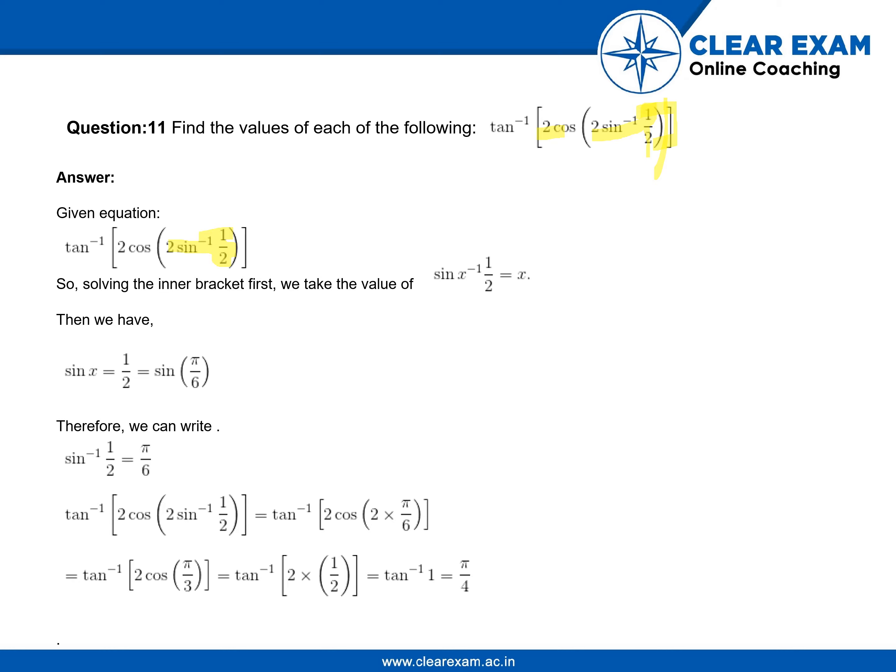Now what will we get? Sin inverse. Let's assume that sin inverse half is x. Then sin x is equal to half, which is equal to pi by 6. Sin pi by 6 is half. So we got that sin inverse half is pi by 6.